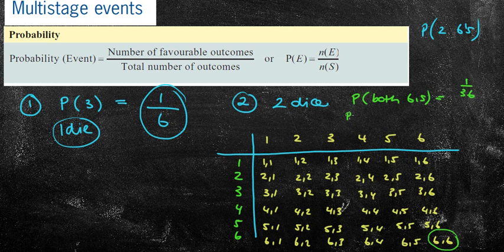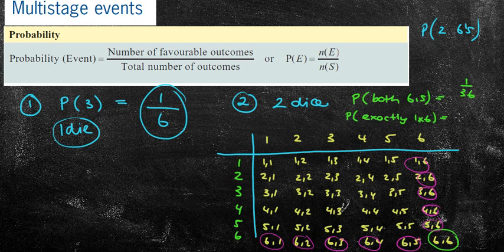They might say the probability that I get exactly 1, 6. Which means I've got 1, 6 there, 2, 3, 4, 5, 6, 7, 8, 9, 10. Therefore, I've got 10 in 36 chances. Wouldn't be this one here because I've got double 6s there.